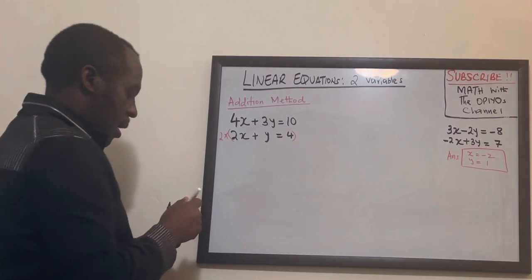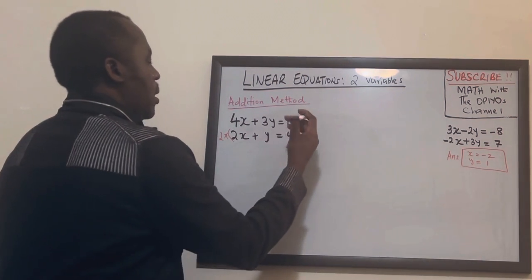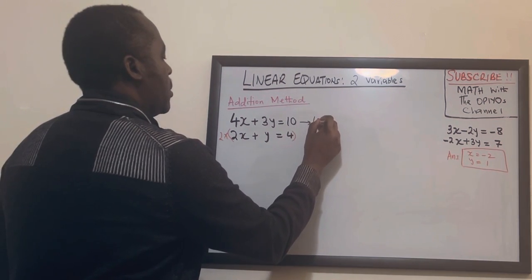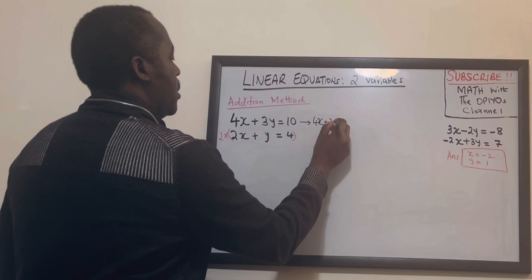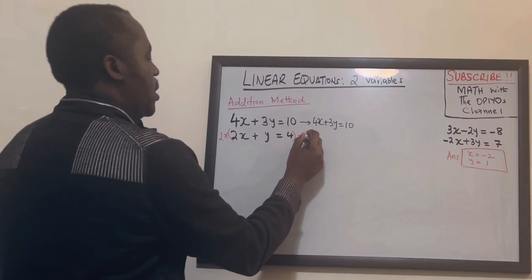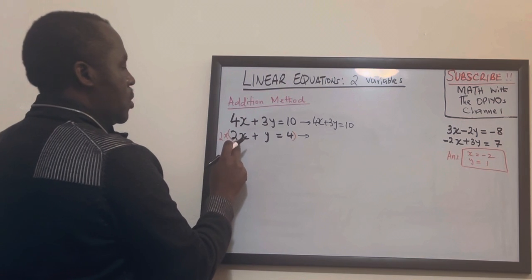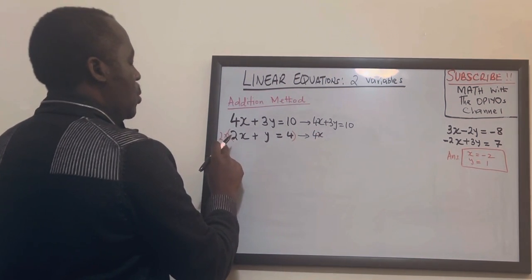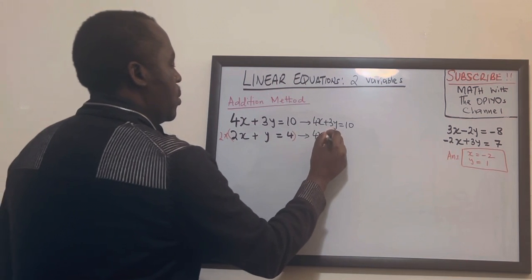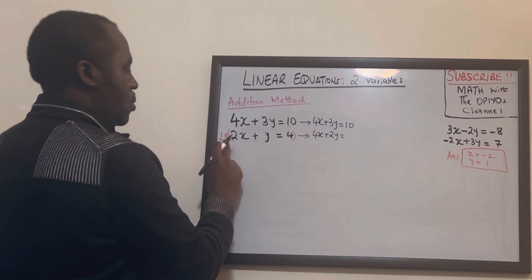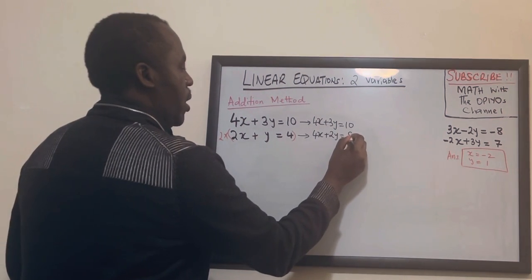what I'll end up with is this will stay the same. So 4x plus 3y equals 10. Now this changes so 2 times 2x will be 4x and then 2 times y will be 2y and you have to multiply everything so 2 times 4 will give you 8.